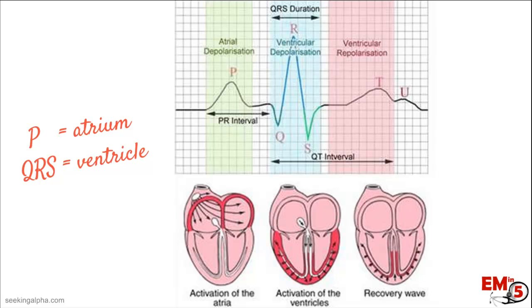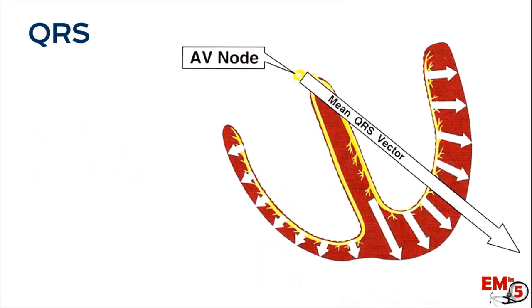There are two axes we're going to look at here: the P wave, which represents atrial depolarization, and the QRS complex, which represents ventricular depolarization. Depolarization in the ventricle starts up at the AV node, goes very rapidly through the Purkinje fibers, and then depolarization occurs quickly from the inside out all over the heart.